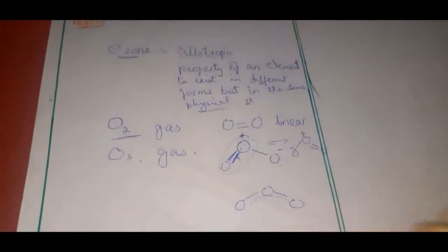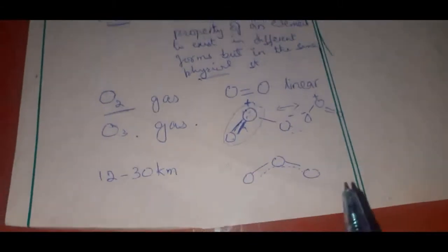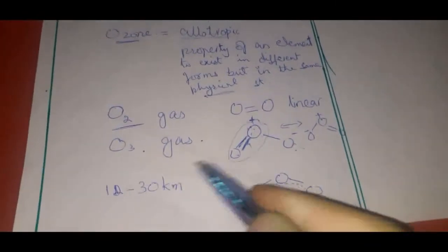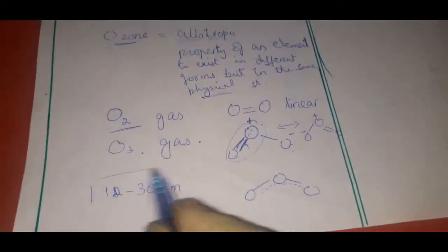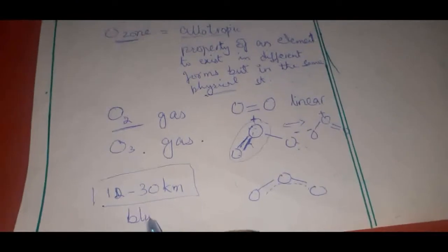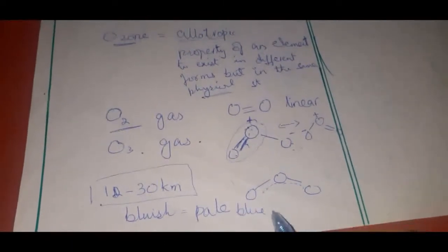Now, some properties of ozone from page 146. Regarding occurrence, ozone exists from 11 to 30 kilometers above the surface of Earth, above the troposphere — that is in the stratosphere — which is why it is also called the ozonosphere. Ozone is a pale blue gas, meaning a light blue gas.